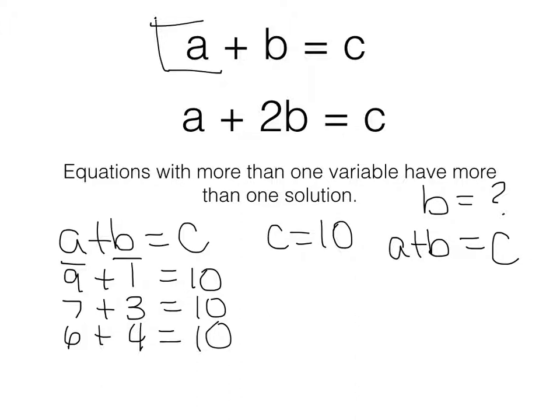Well, we know that we want to isolate the variable. We want b to be by itself. So we use our backtracking or our inverse operations. Since this is a positive a, I would put in a negative a. What I do to one side, I do to the other, to maintain equality.